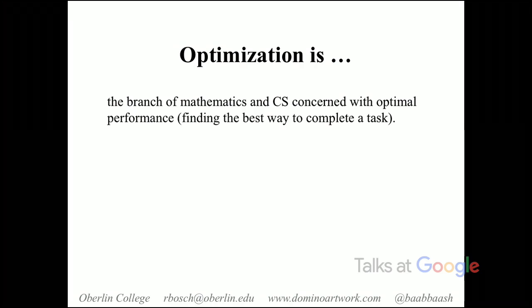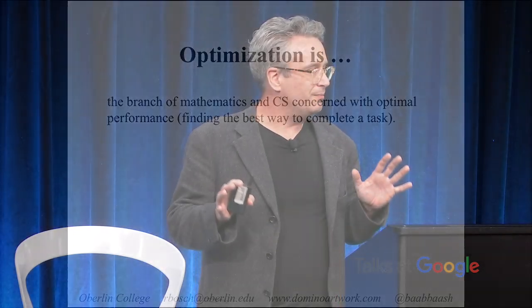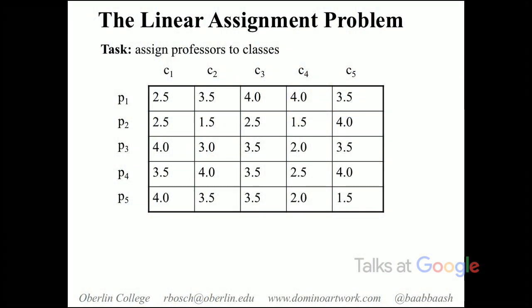What I'm going to do in this talk is alternate between talking about classical applications of mathematical optimization and then transition into talking about how I've adapted those classical applications to do visual design work. I'm going to run through something I do whenever I give this talk — the linear assignment problem. This is a toy version of an actual problem people care about: assigning workers to tasks.